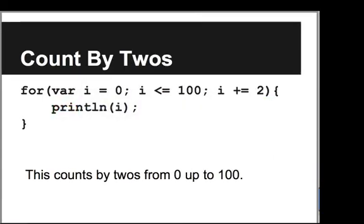Let's look at one more version of a different for loop. Now we're going to use a for loop to count by 2's from 0 up until 100. So let's go and write this one in our code editor.